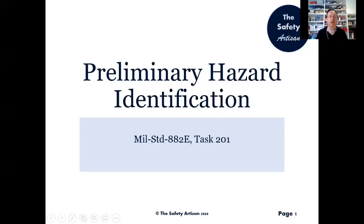Let's look at what we're doing today, which is preliminary hazard identification. We are looking at one of the first actual analysis tasks in MIL-STD-882 Echo, which is a system safety engineering standard from the US government. It's typically used on military systems but does turn up elsewhere, and preliminary hazard ID is Task 201.